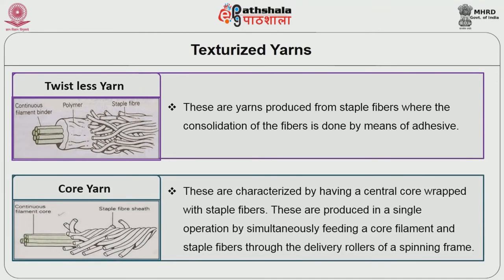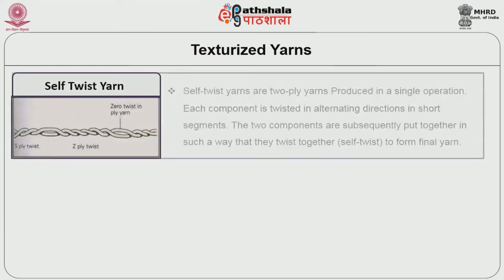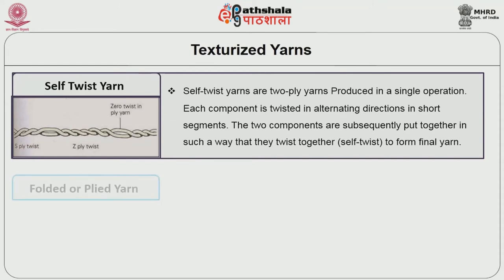Next yarn is core yarn. Core yarns are characterized by having a central core wrapped with staple fibers. These are produced in a single operation by simultaneously feeding a core filament and staple fiber through the delivery rollers of a spinning frame. The central core is a filament and on the surface the yarn contains staple fibers, called the sheath. Third type of yarn is self-twist yarn. Self-twist yarns are two-ply yarns produced in a single operation. Each component is twisted in alternating directions in short segments. The two components are subsequently put together so that they twist together — that is called self-twist — to form a final yarn.